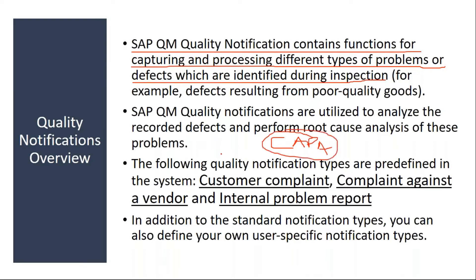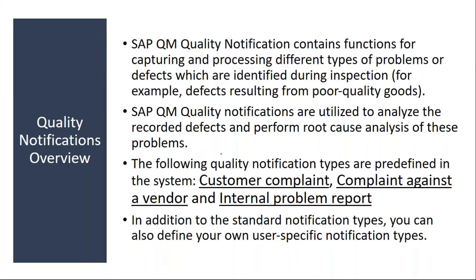When you do quality inspection, if there is any problem — if the material got rejected — then to capture what is the problem, capture the problem information, and what corrective actions and what preventive actions you are going to take, they will use quality notifications.